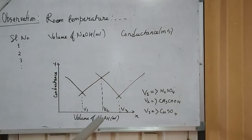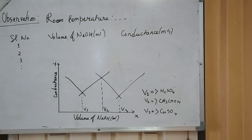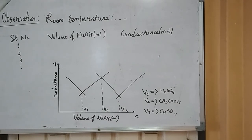We have to prepare a plot of conductance versus volume of sodium hydroxide. We will get three break points: the first one corresponds to sulfuric acid, the second one corresponds to acetic acid, and the third one corresponds to copper sulfate. Then, using the formula V1N1 = V2N2, we can determine the concentration of sulfuric acid, acetic acid and copper sulfate.